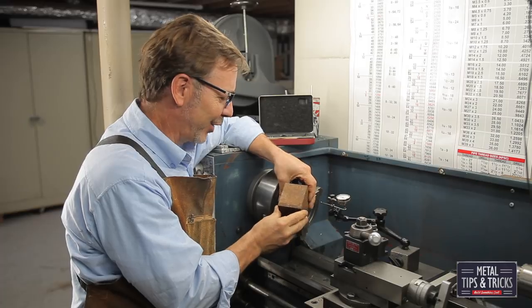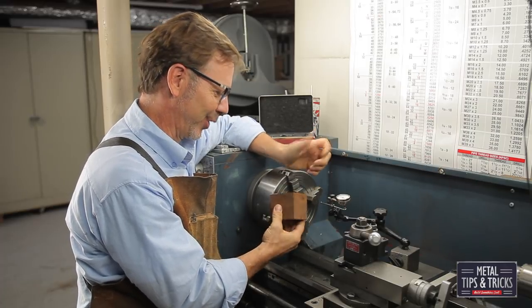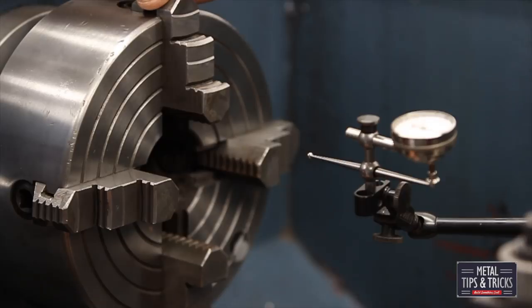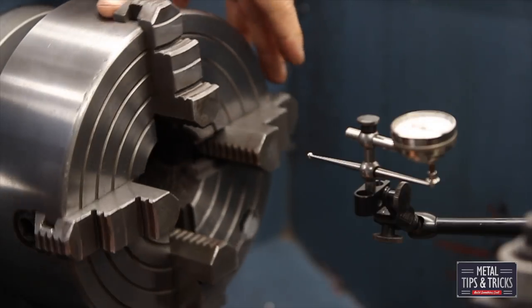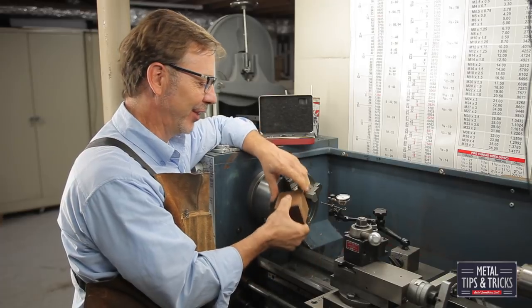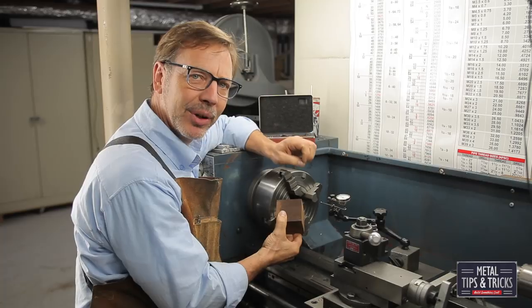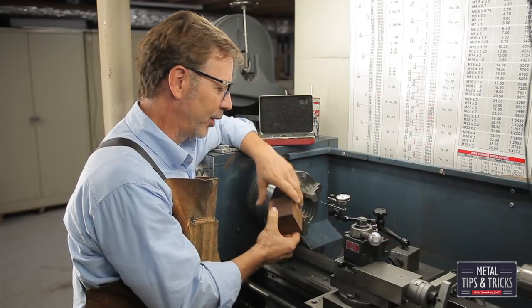So you think putting a square item into the lathe is really easy. Well, it is and it isn't. You have to have a four-jaw chuck, of course. The challenge here is this stock is actually not square, it's rectangular. But the same principles apply, and I'm going to show you how to do this.